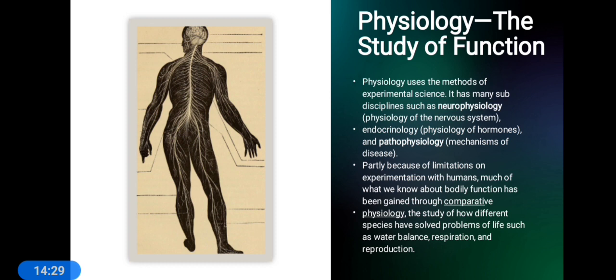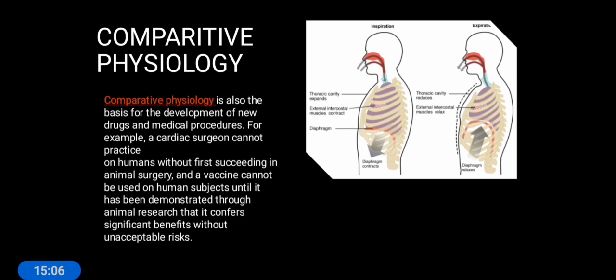Partially because of limitations of experimentation with humans, much of what we know about bodily functions has been gained through comparative physiology. Just as with comparative anatomy, here you are comparing functions across different species. Comparative physiology is the study of how different species have solved problems of life such as water balance, respiration, and reproduction — carrying out studies on different species to understand relationships and problems.